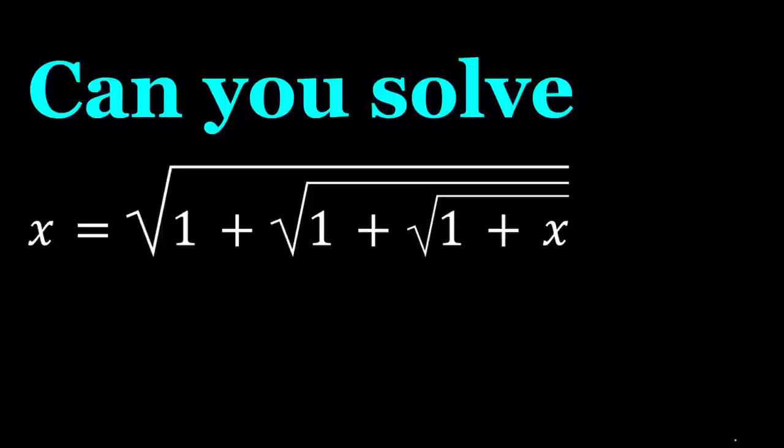So we have x equals square root of 1 plus the square root of 1 plus the square root of 1 plus x and we're going to be solving for x values. I'm going to show you a graph at the end which is pretty interesting because we're going to be looking at different iterations of this.